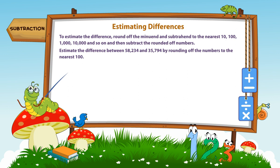Estimate the difference between 58,234 and 35,794 by rounding off the numbers to the nearest hundred.